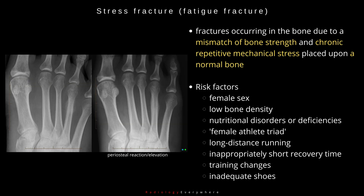Now we're going to talk about stress fractures, also called fatigue fractures. These fractures occur in the bone due to a mismatch of bone strength and chronic repetitive mechanical stress upon a normal bone. There are multiple known risk factors including being female, low bone density, nutritional disorders or deficiencies, and the female athlete triad.